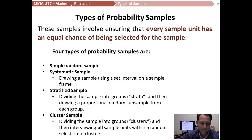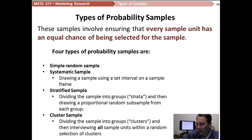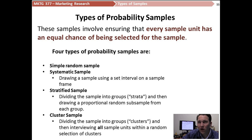Now let's talk about a few different types of probability samples — there are four basic categories. Remember that definition: these samples involve ensuring that every sample unit has an equal chance of being selected. First, we have a simple random sample. By the way, pages seven and eight of your lecture notes have charts with a lot more detail on the types of probability and non-probability samples. A simple random sample is exactly what it sounds like: you have a sample frame list and you just draw a random group from it to use in your study.